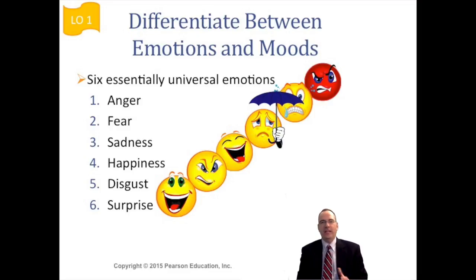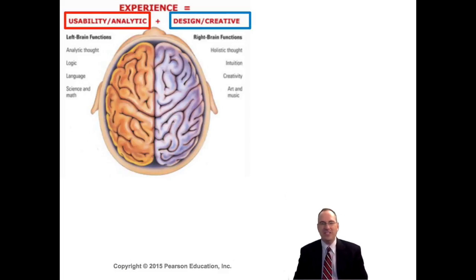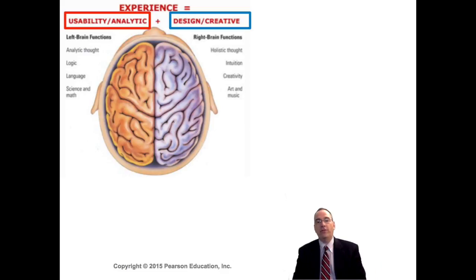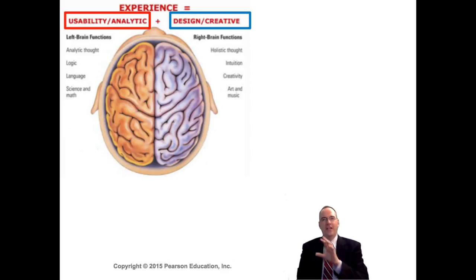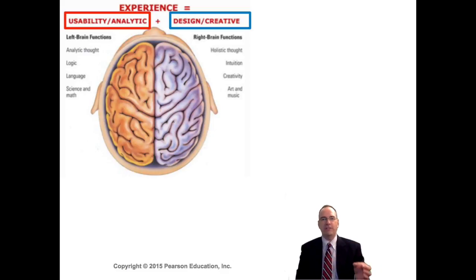We also want to understand how the brain works. We talk about left brain and right brain, and there's a little something to it. Certain functions — like analytic thought, logic, language, science, and math — are associated with one side. Then there are classically called right-brain activities: holistic thought, intuition, creativity, art, music, and those types of things. It's not strictly left and right brain so much as different functions, but the analytic and creative functions come from different places.